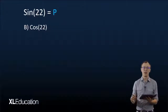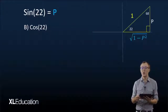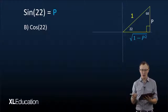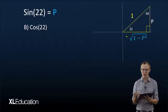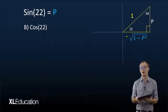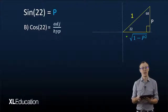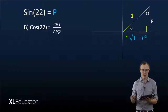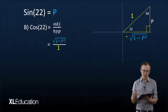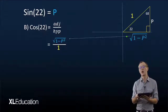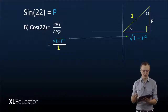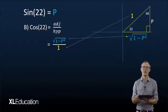For cos(22°), we can read it off our triangle. We found our adjacent side using Pythagoras, so cos(22°) equals the adjacent over the hypotenuse, which equals the square root of (1 minus P squared), all over 1.